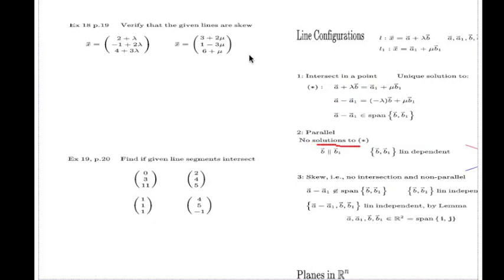I also have to test that the vectors are not parallel. The b vector here and the b vector here - they are not parallel. Being parallel means one vector is a scalar multiple of the other.